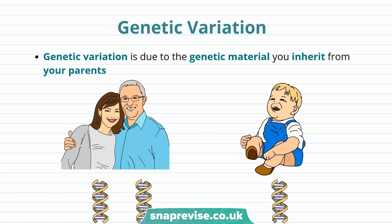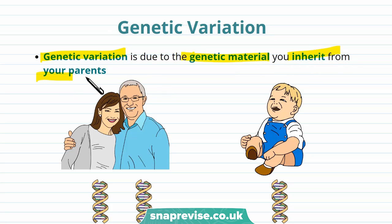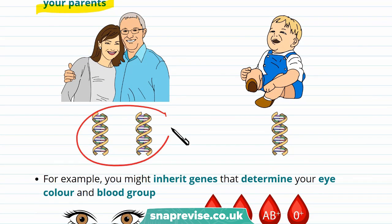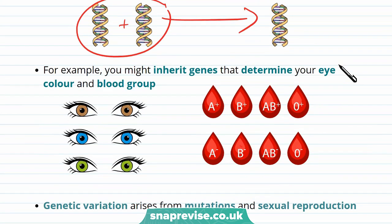Everyone, apart from identical twins, has a unique set of DNA. Genetic variation — the differences between genomes of different people — is due to the genetic material you inherit from your parents. You inherit these genes during sexual reproduction. For example, you might inherit genes that determine your eye colour and blood group.